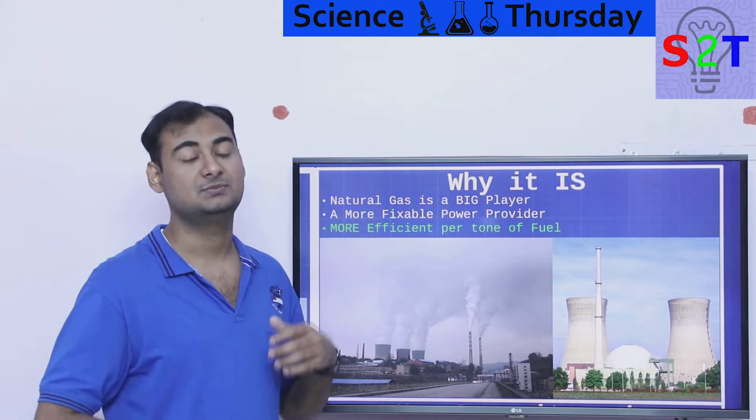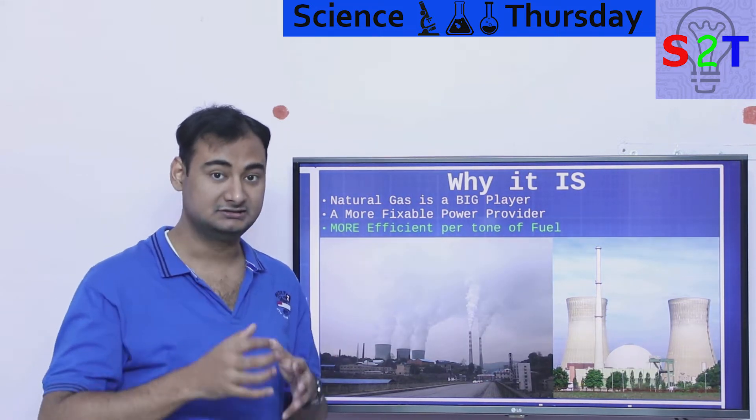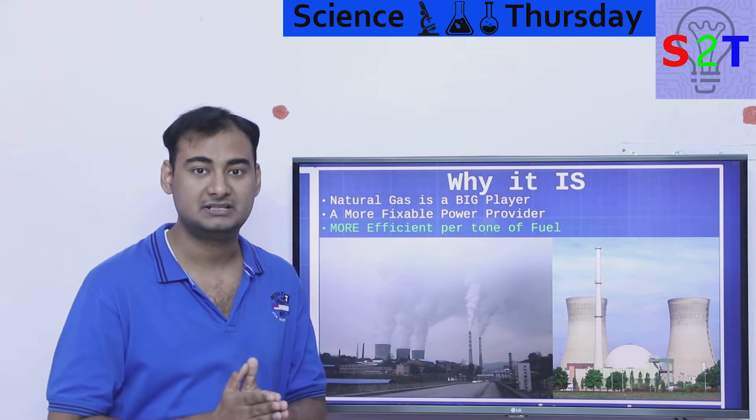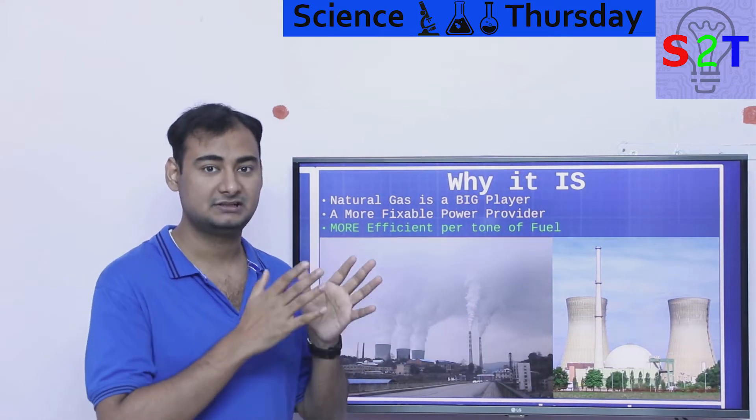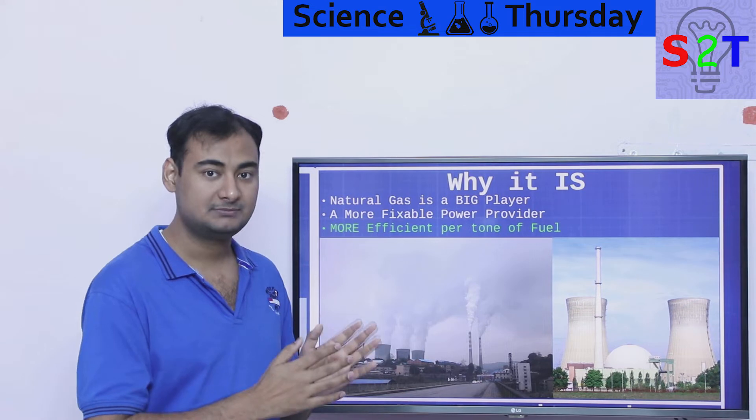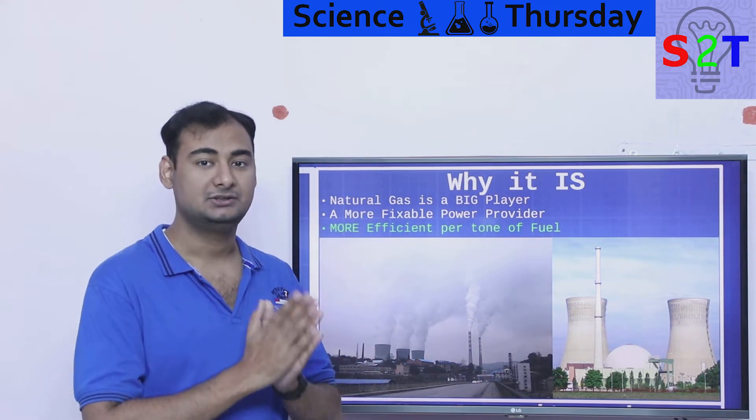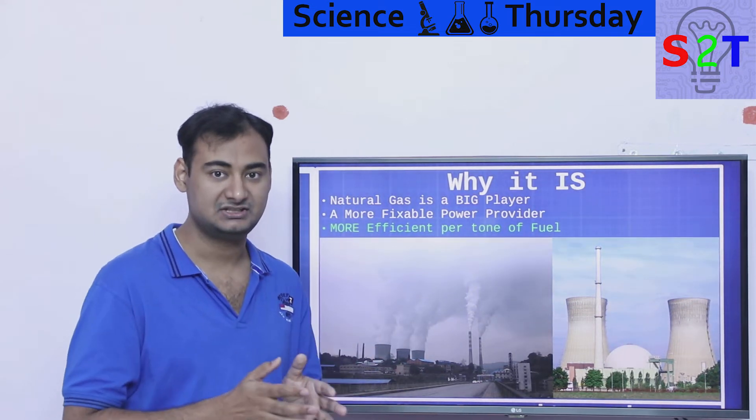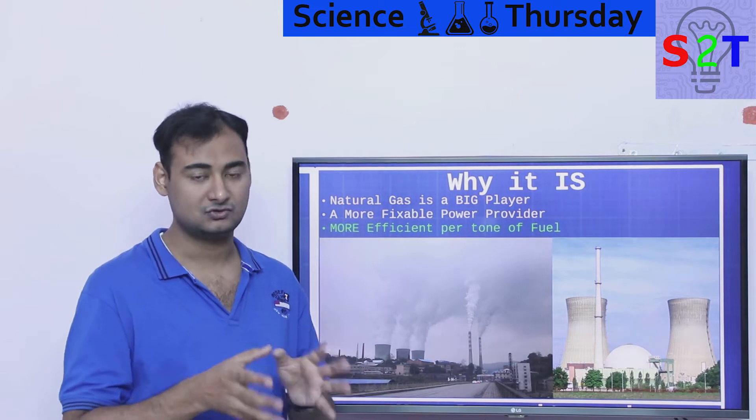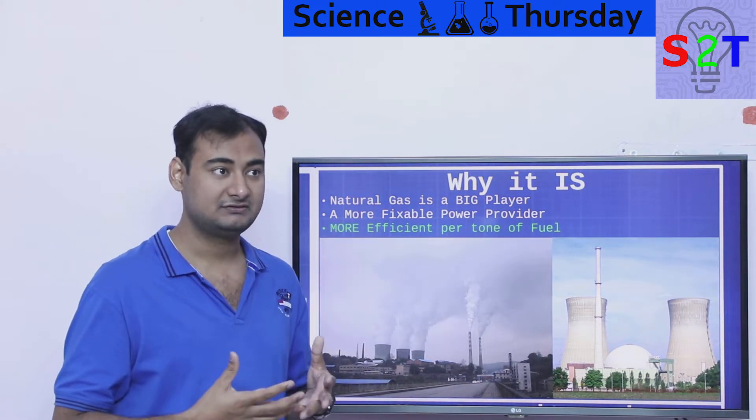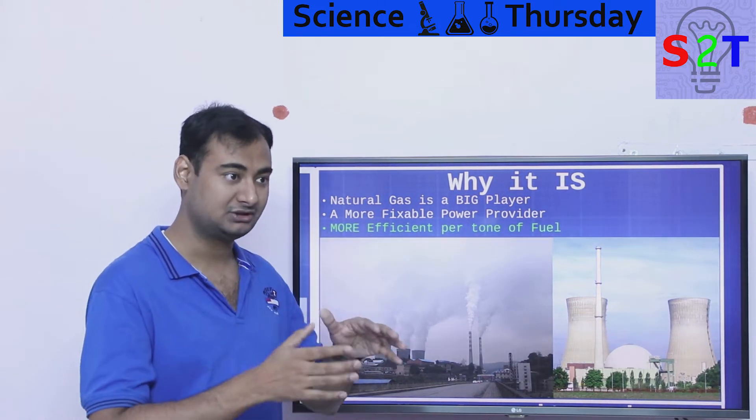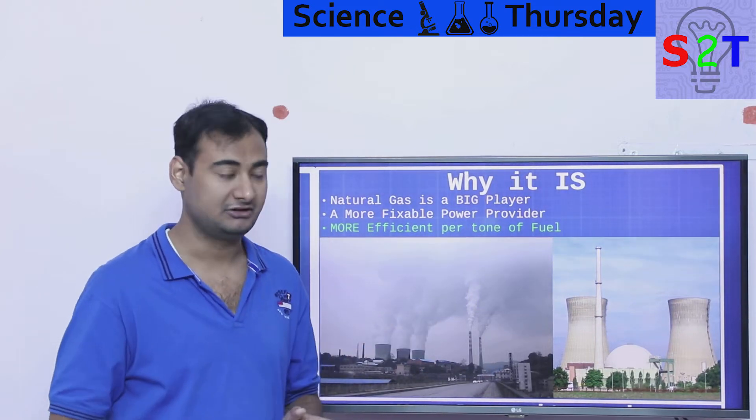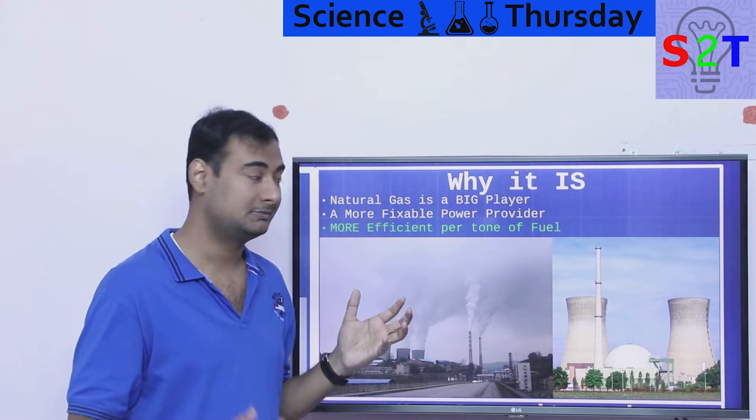Delhi, India's capital, took a very big step years back and it has paid off. They are switching all their primary public transport into gas-based, basically CNG based compressed natural gas which is mostly methane. The benefit has been tangible - pollution before versus after is drastically different. So natural gas is becoming a big player.